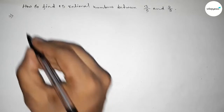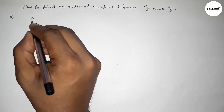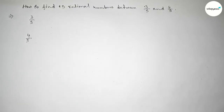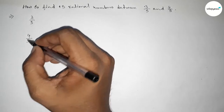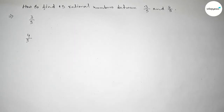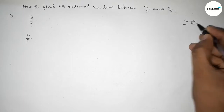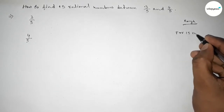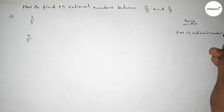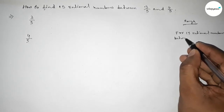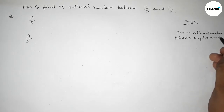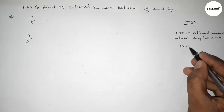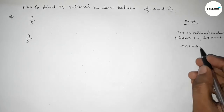Here we are given two numbers: 3 over 5 and 4 over 5. Both the denominators are equal. To find 15 rational numbers between any two numbers, we follow this method: we multiply both numbers by 15 plus 1, which equals 16.